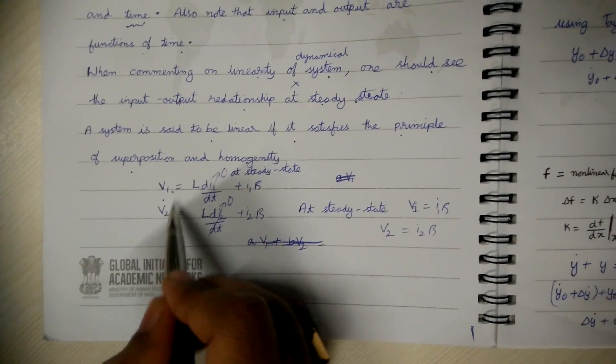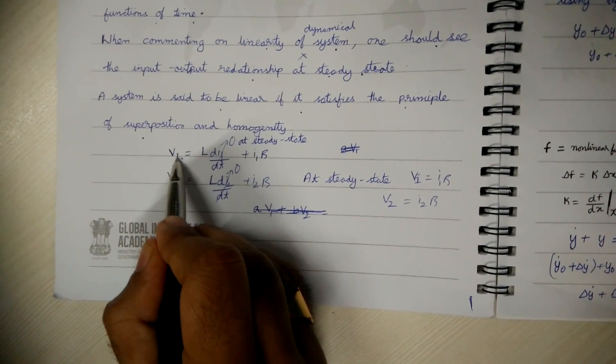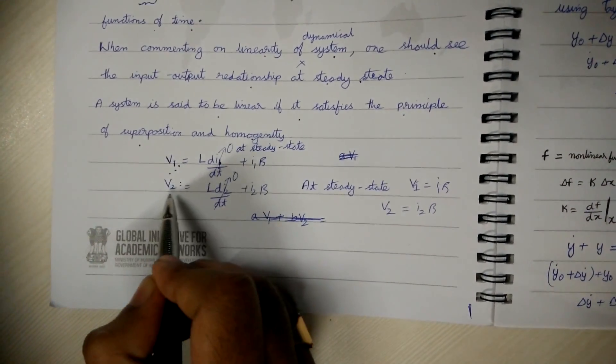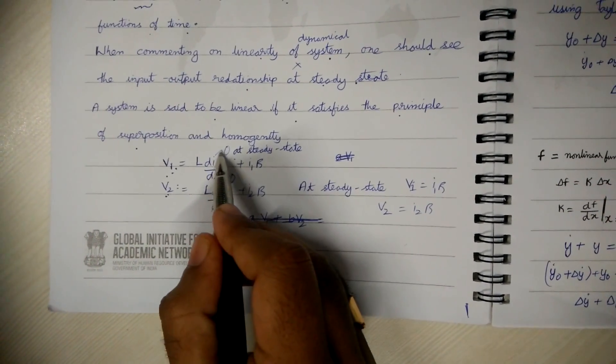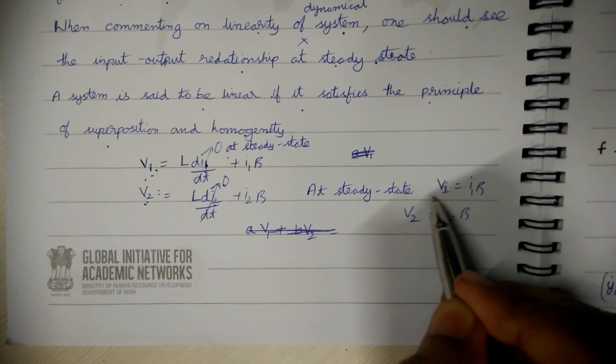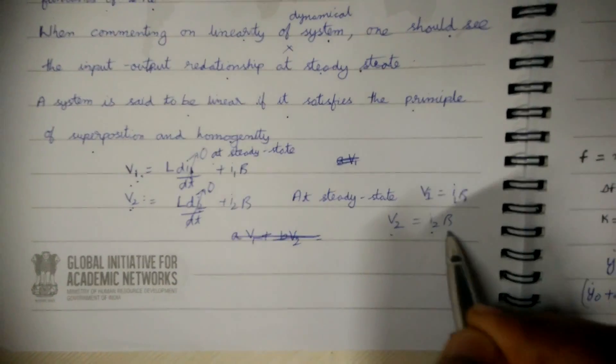So consider the same equation V1 equals L dI1 by dt plus I1 R for one of the inputs let the current be I1 and for some other input let the current be I2. At steady state this dynamics part goes to zero. So at steady state V1 equals I1 R and V2 equals I2 R.